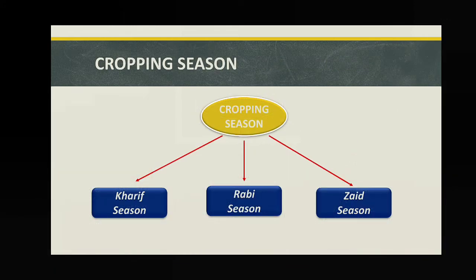Now come to today's topic: cropping seasons. In the agricultural year, there are three types of seasons present. One is called Kharif season, which we can correlate to wet summer or rainy or advancing monsoon season. Rabi season is equal to dry winter season, and Zaid season is equal to dry summer season. So there are three types of cropping seasons: Kharif, Rabi, and Zaid.